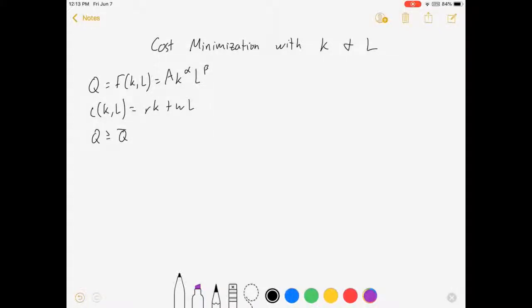Hey everybody and welcome to my calculus based cost minimization video. What we're going to do is an example of a firm who chooses the optimal allocation of capital and labor to minimize the cost of producing some fixed quantity of a good.